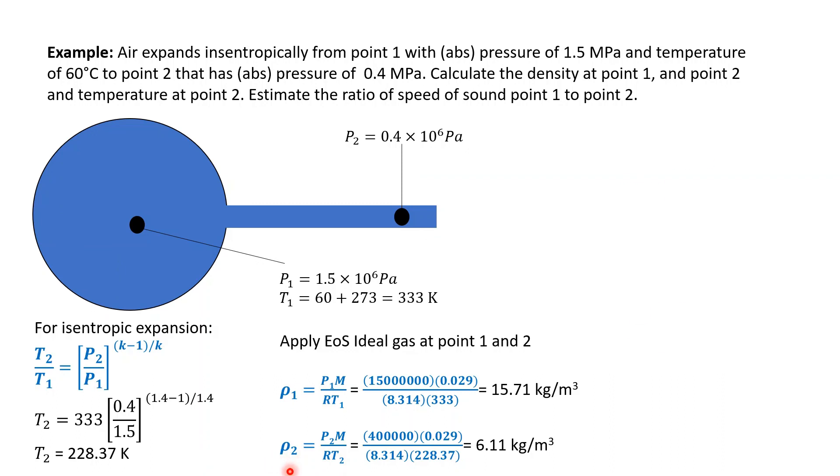Then, we calculate the speed of sound. Speed of sound, you can either use this equation so basically you end up with just comparing the square root of the temperature ratio of point 1 to point 2, or you can use another form of equation and the solution for this problem is C1 over C2 equal to 1.21.